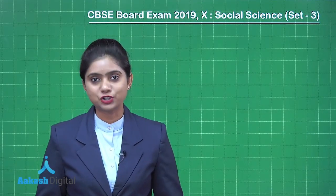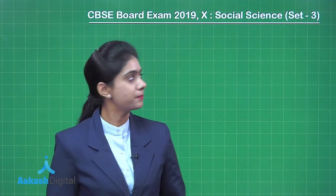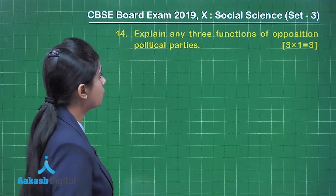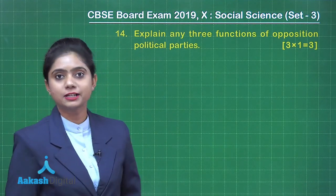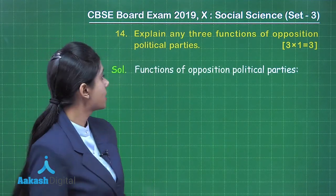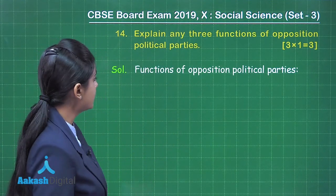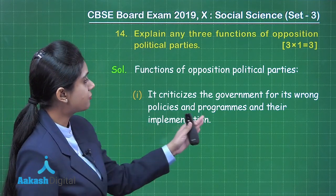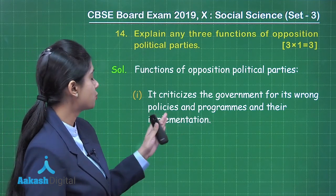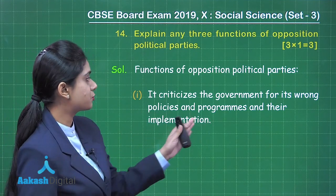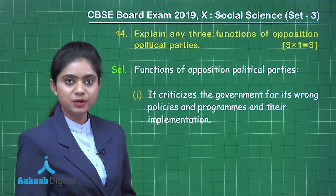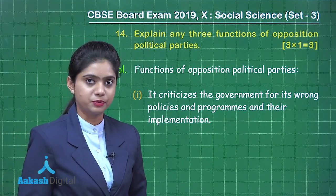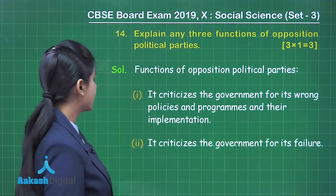Now, let's discuss question number 14: Explain any three functions of opposition political parties. The first function: it criticizes the government for its wrong policies and programs and their implementations, which creates awareness amongst the people. Second function: